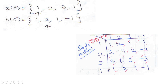We pick the second element, 2, and multiply all elements of h(n) by 2: giving [2, 4, 2, -2]. Then we take the next element, 3, and multiply: giving [3, 6, 3, -3]. Then for the last element, 1: giving [1, 2, 1, -1]. After that, we add them up diagonally and get our convolution sequence — the first element is 1, then 2+2=4, then 3+4+1=8, and so on.